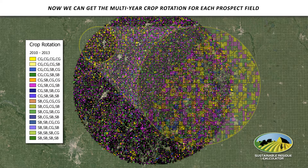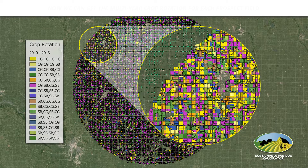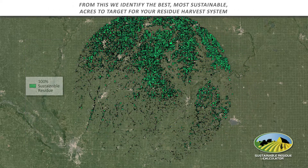The prospecting tool provides a simple map interface to interact with a variety of data sets, USDA models, and scenarios in a way that lets a supply chain manager identify the fields and soils where their stover harvest system is economically and environmentally sustainable.